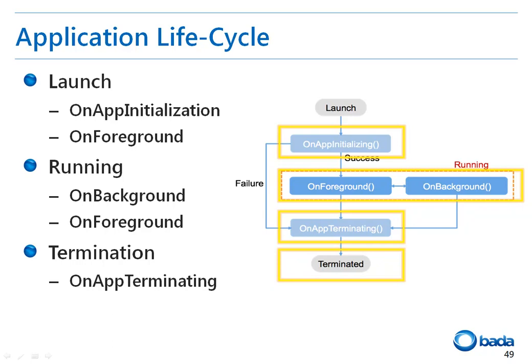If a situation occurs where the application needs to run in the background, the OnBackground function of the application is called. If the application returns to the foreground, the OnForeground function is called. When the application needs to be terminated, the OnAppTerminating function is called. Therefore, you can precisely manage the application lifecycle by inserting the appropriate code into the application.